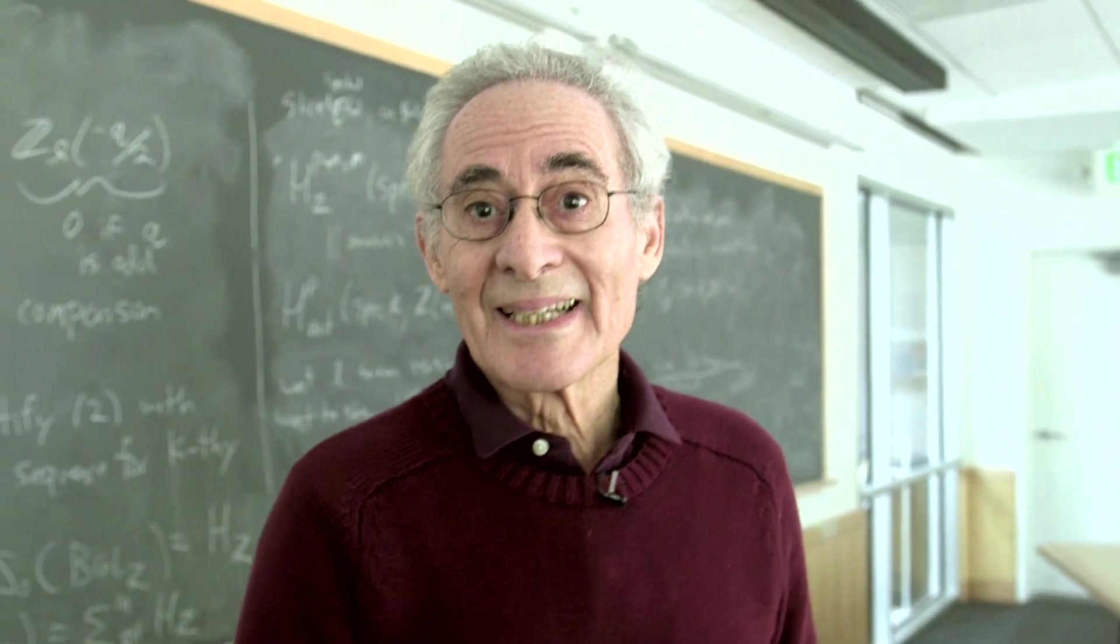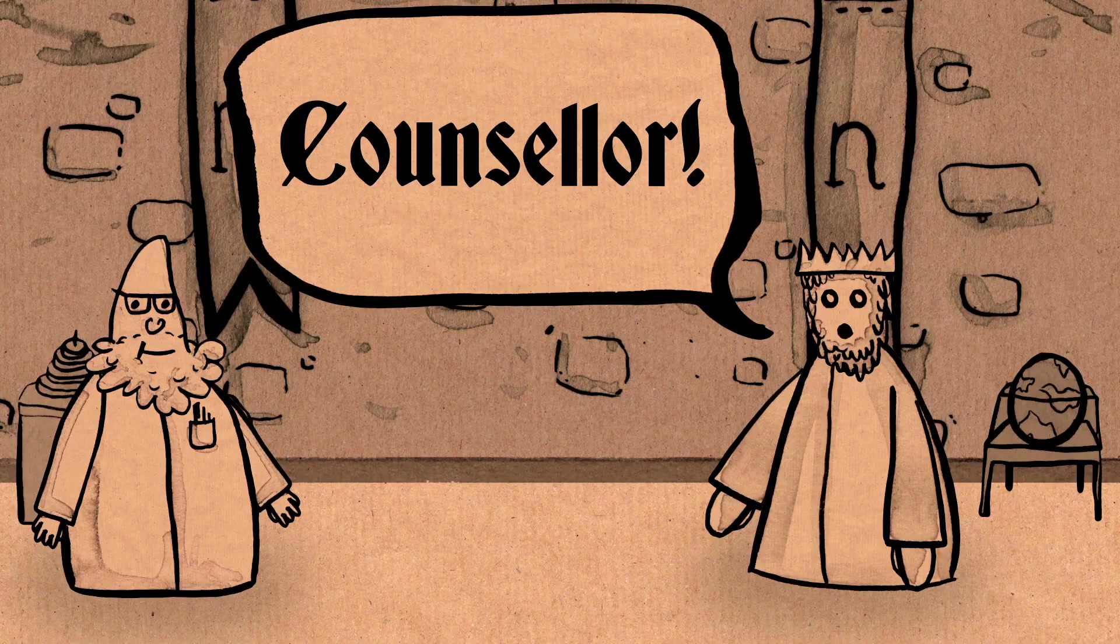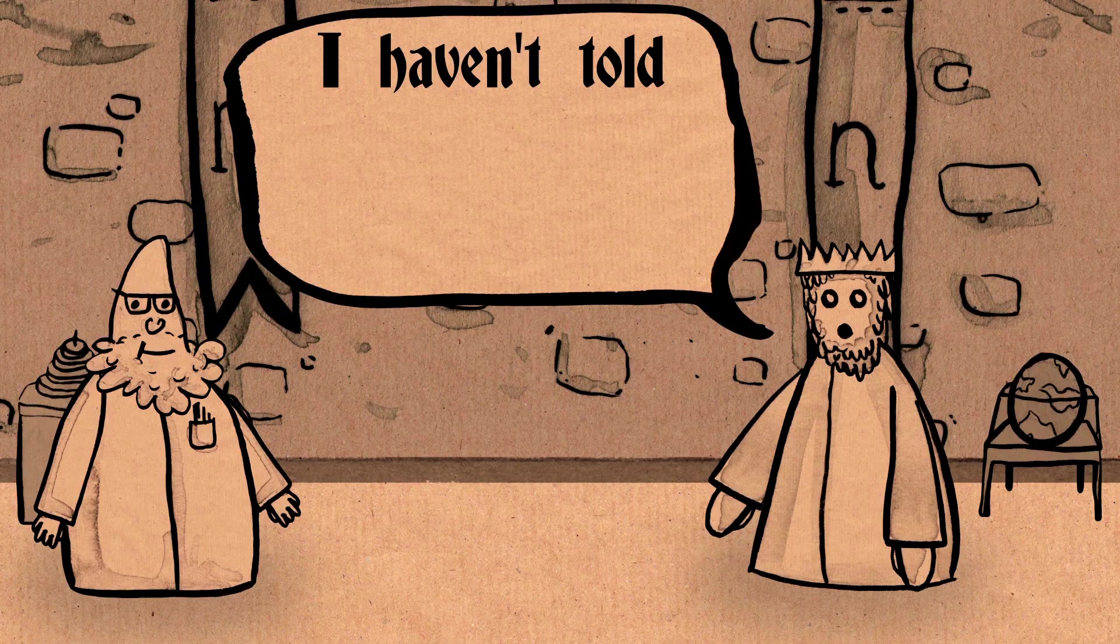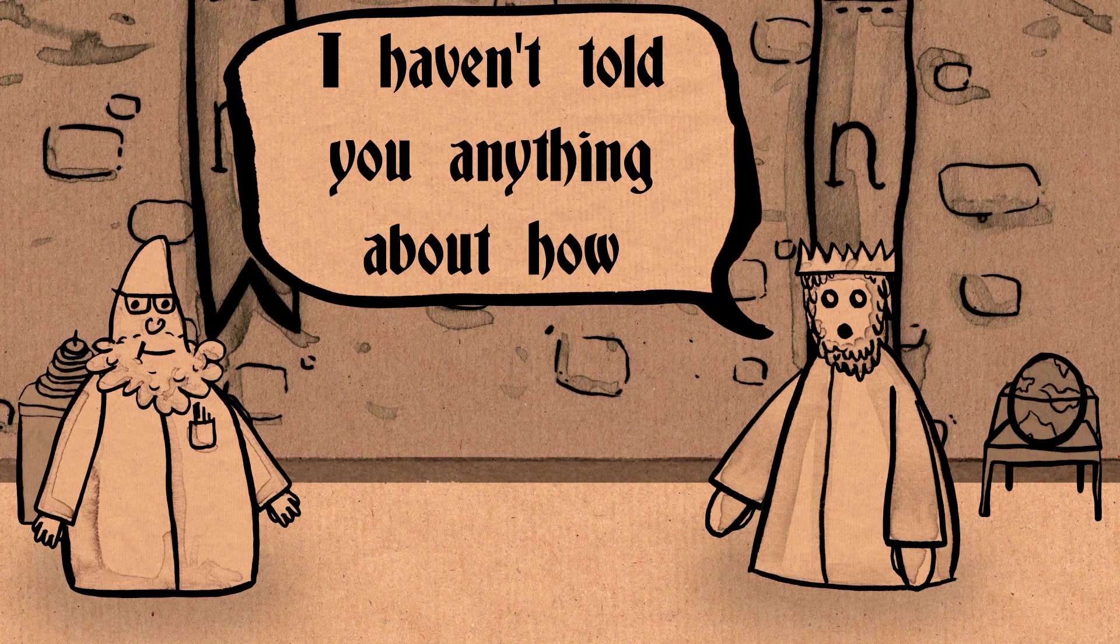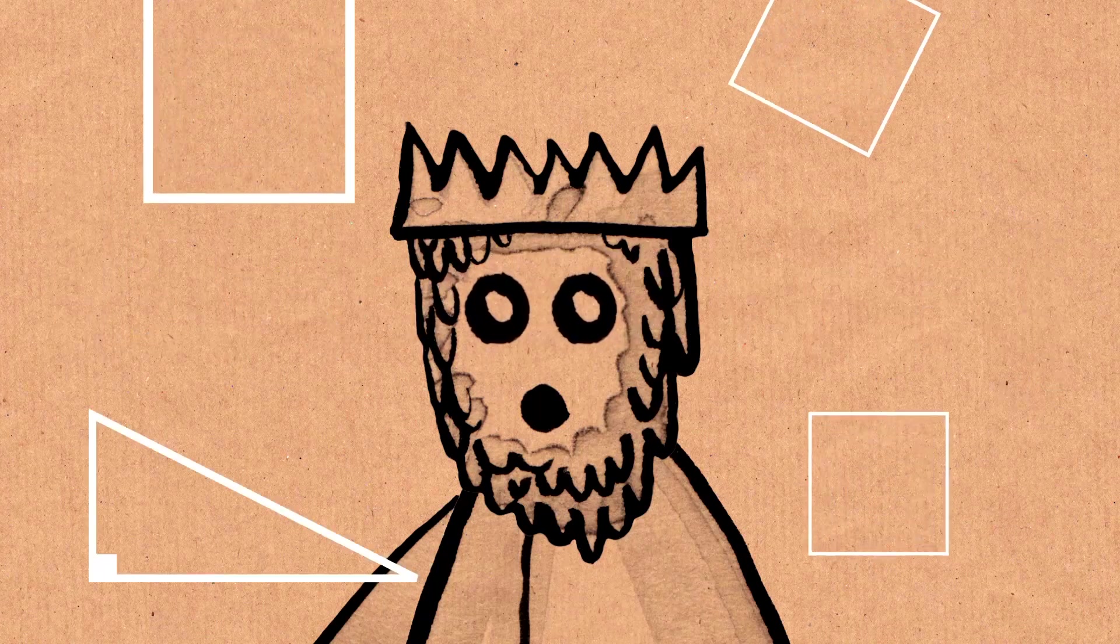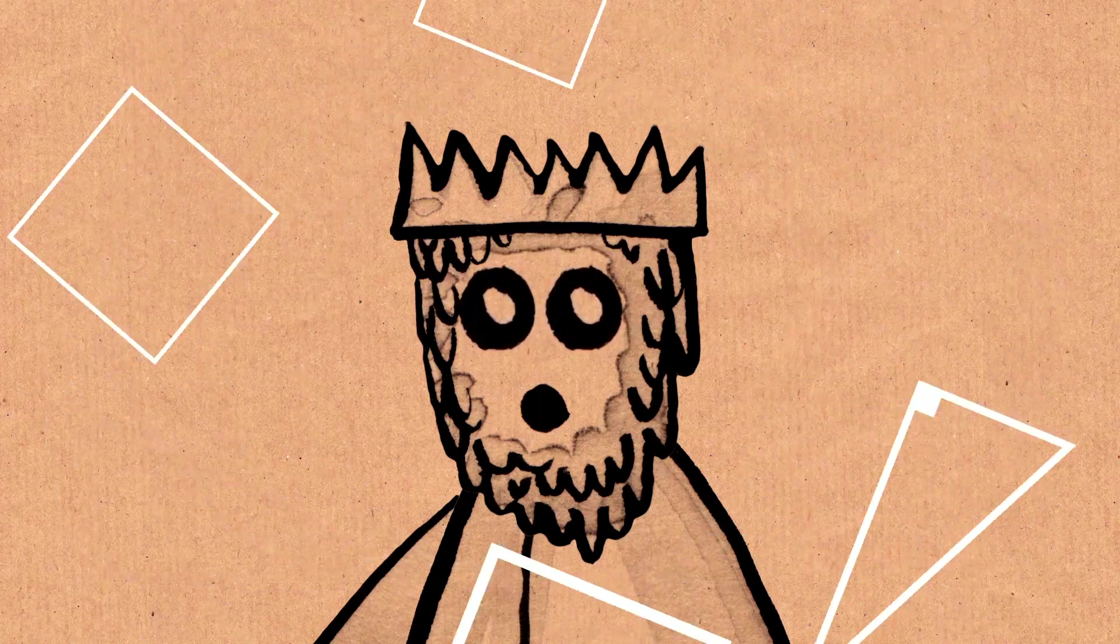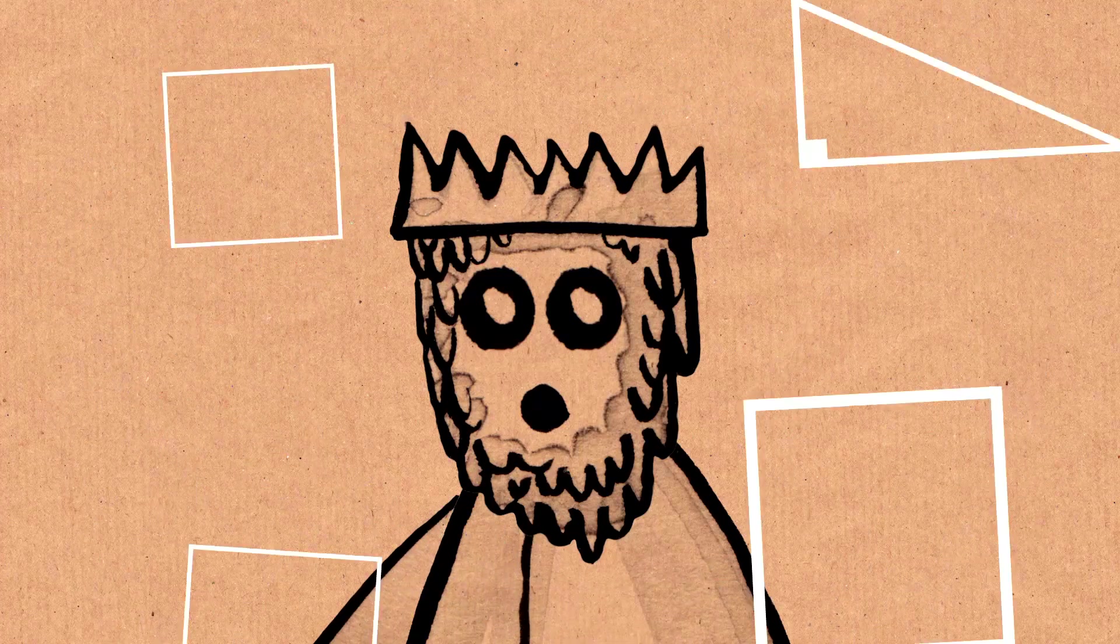That's easy, says the king. And he's about to leave. But then says, counselor, I haven't told you anything about how long the sides of these squares are or the shape of the triangle.